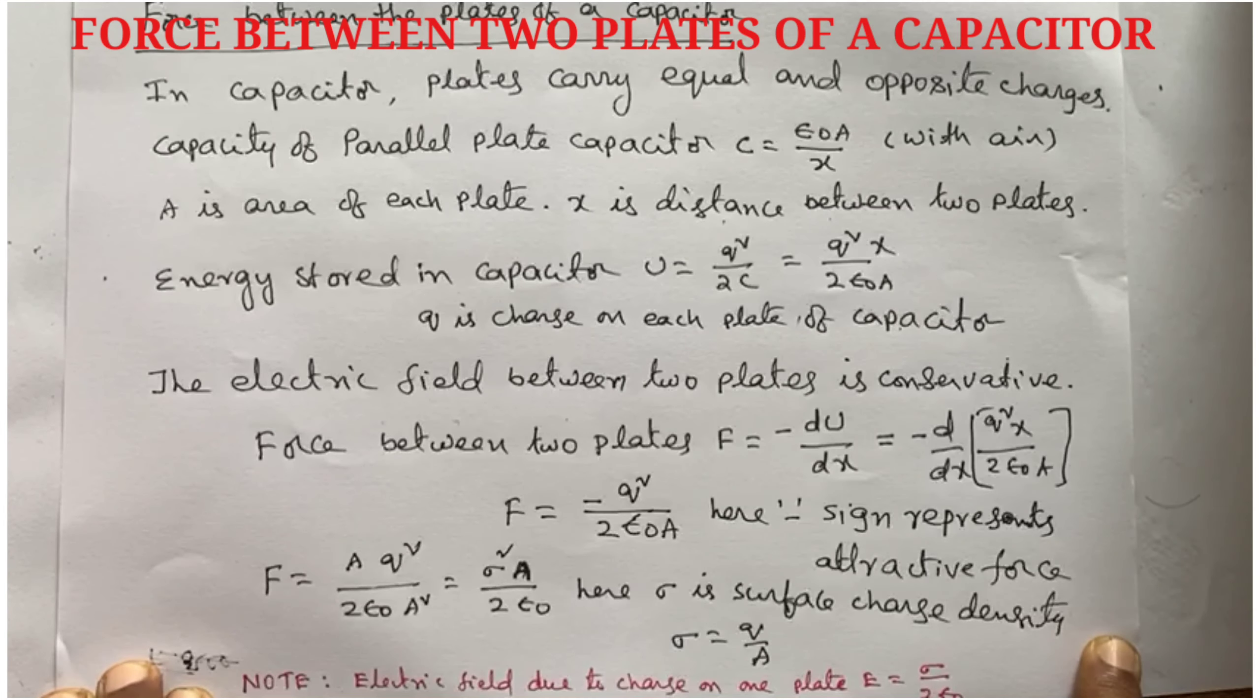One important note: The electric field between the two plates due to charge on one plate is E equals sigma by 2 epsilon not.